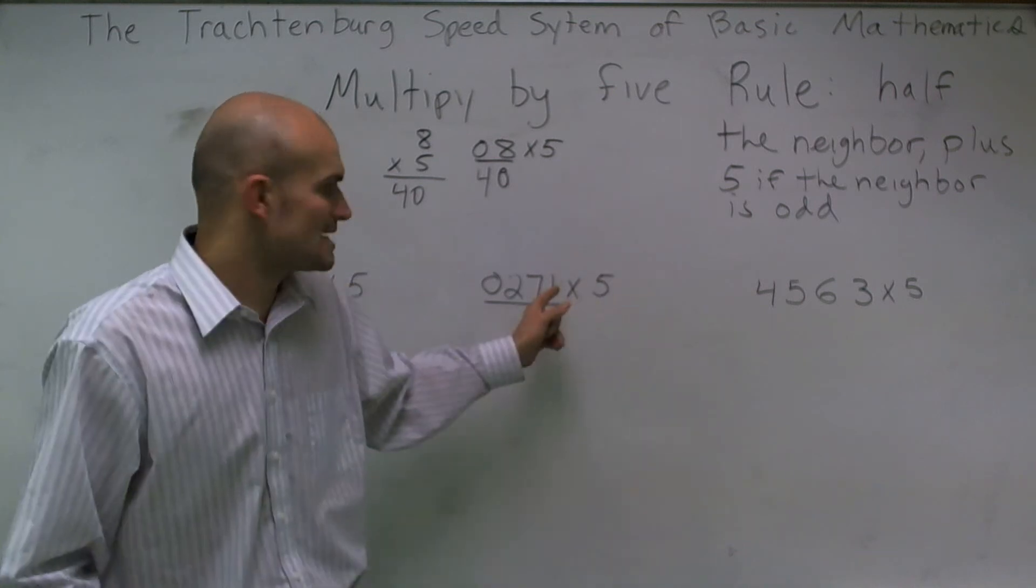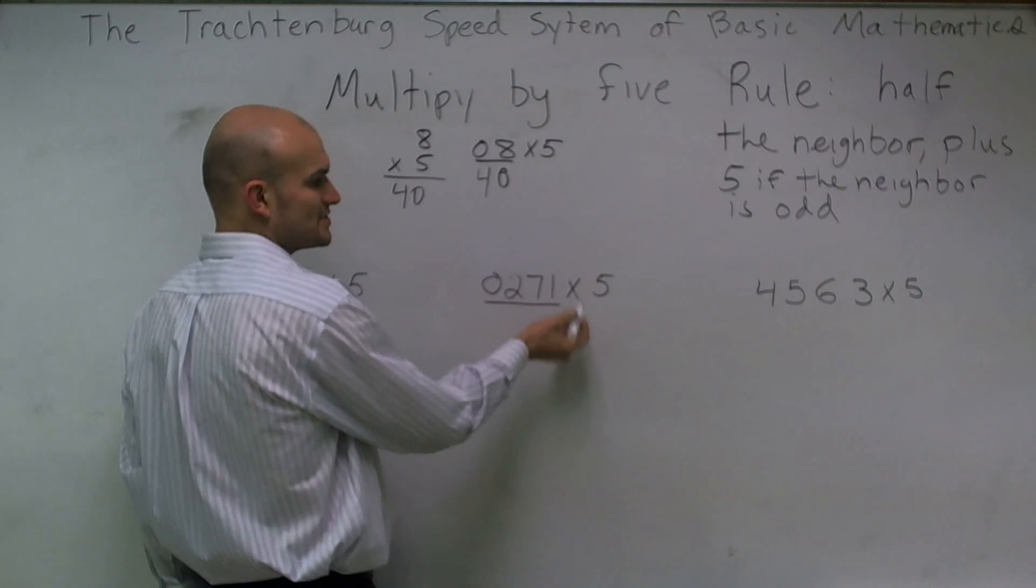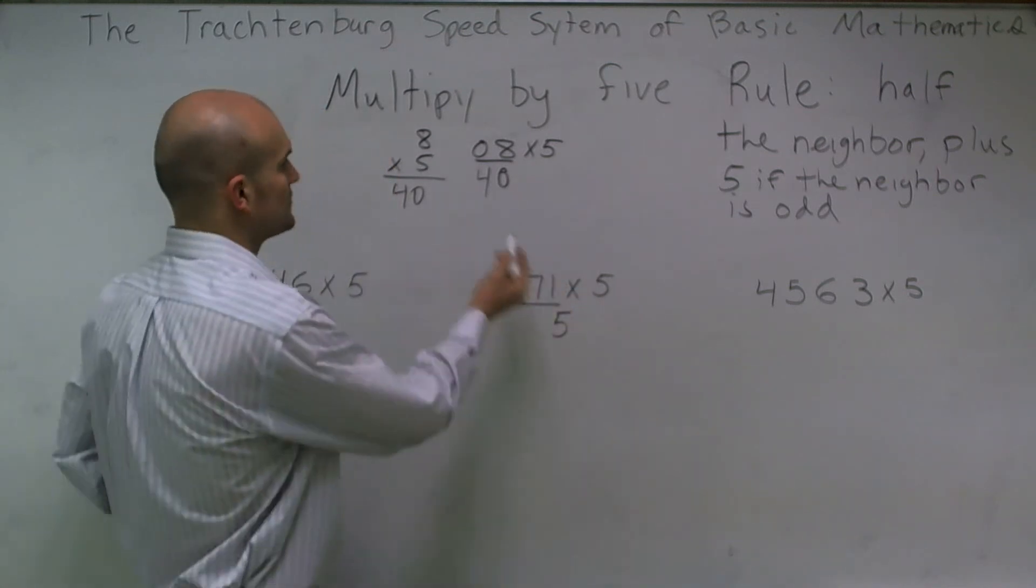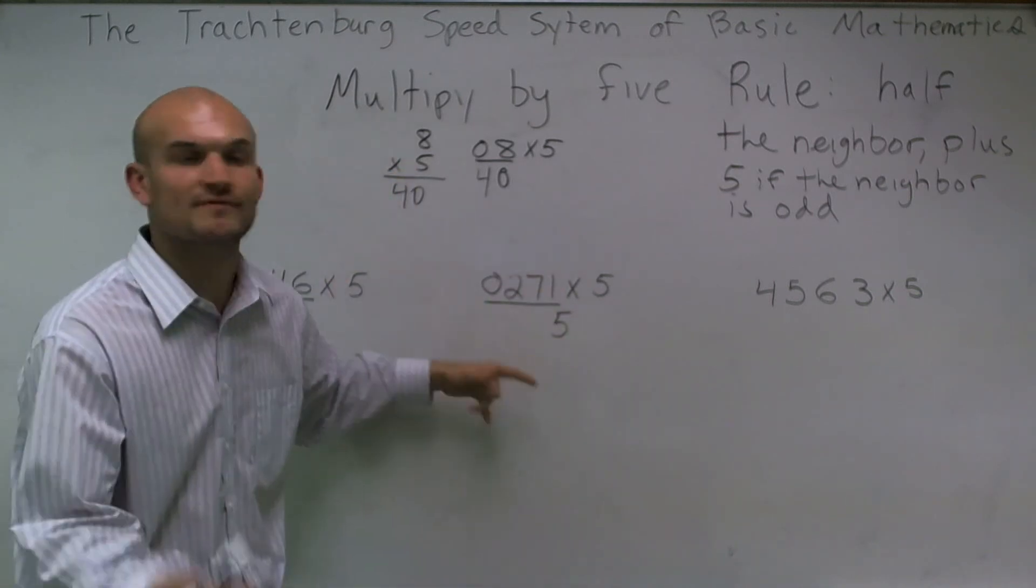But then since this is odd, I need to add 5 to it. So therefore, my neighbor is 0, but then 0 plus 5 gives me 5. And we know that's going to be true as well. If you think about the old system, if I was to multiply 5 times 1, my first number down would be 5. So I have that right there.